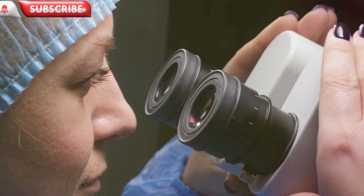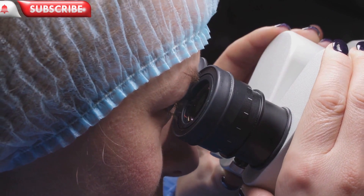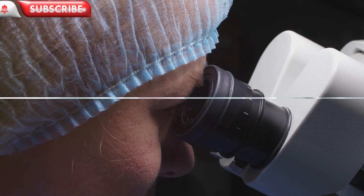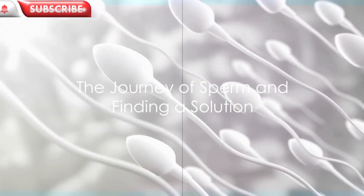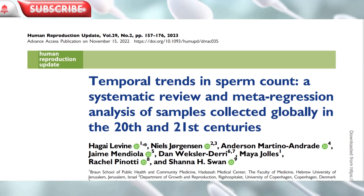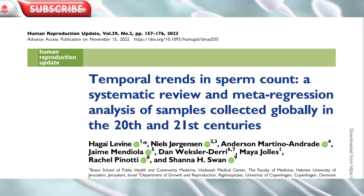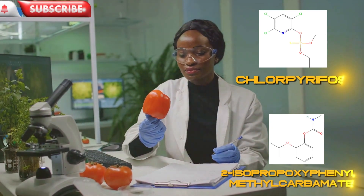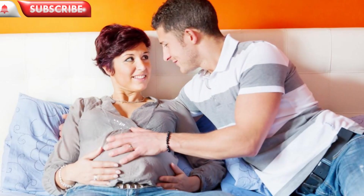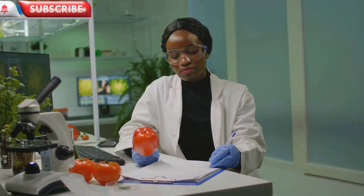A myriad of factors can contribute to reduced sperm motility, including the environment, temperature, hormonal imbalances, infection, lifestyle, and genetic factors. Today, it turns out from a groundbreaking study by Levine that organophosphates and their use with N-methyl carbamates are the real culprits. Couples experiencing difficulties should remember: the journey of sperm is intricate and highly tied to the food we consume.